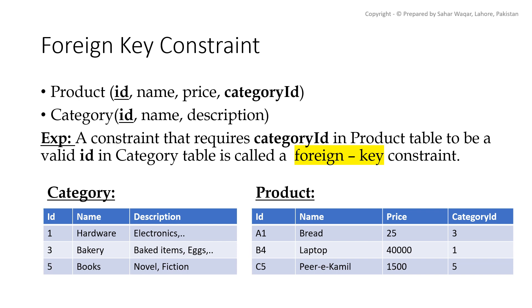Obviously, this should not happen. Otherwise, we cannot say anything about the truthfulness of our data. Similarly, if our product table has a CID of 5, which is maybe books, and if this category 5 is deleted from the category table later, then what should happen with the product having CID 5? Should it be deleted as well? These are the key questions, and the answer actually lies with the foreign key constraint implementation. So if we handle this validity problem, it means we have implemented our foreign key constraint.